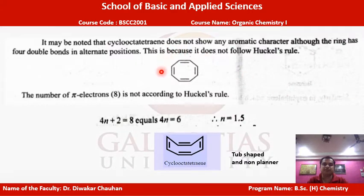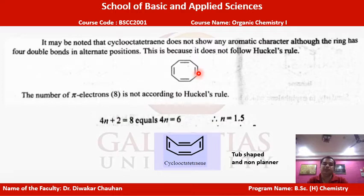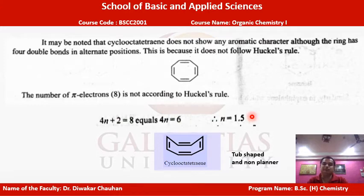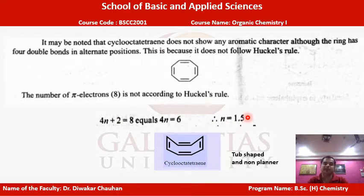Let us examine cyclooctatetraene to determine if it is aromatic, non-aromatic, or anti-aromatic. Cyclooctatetraene has four pi bonds, meaning eight pi electrons. When applying the 4n+2 rule, we get a fractional value (n=1.5), not an integer, so it does not follow Hückel's rule. Therefore cyclooctatetraene cannot be aromatic.